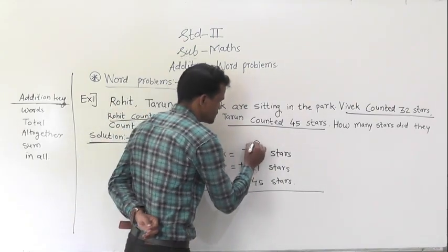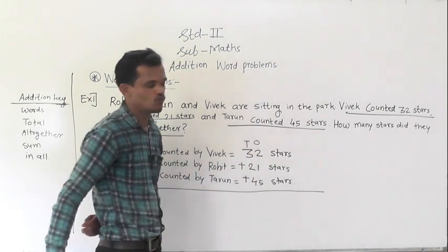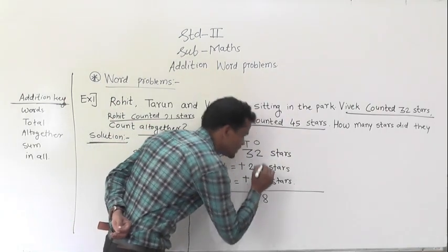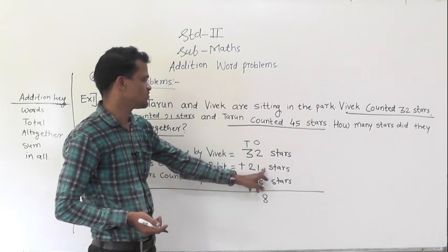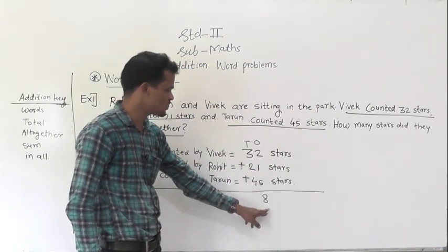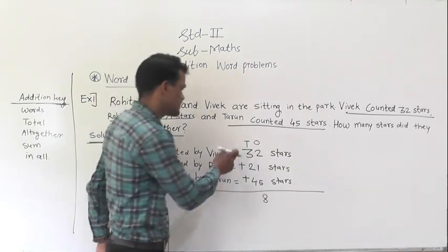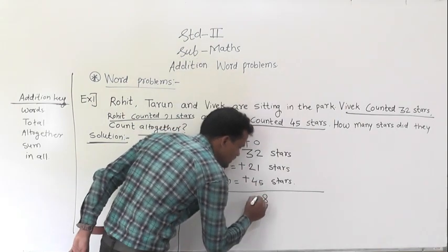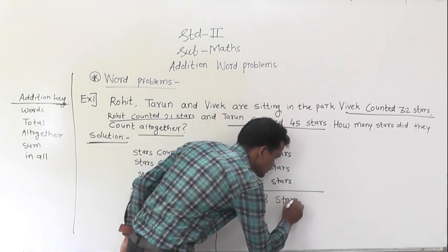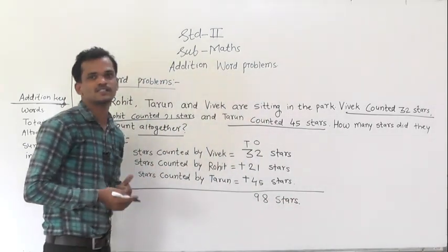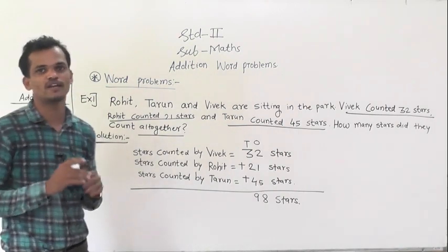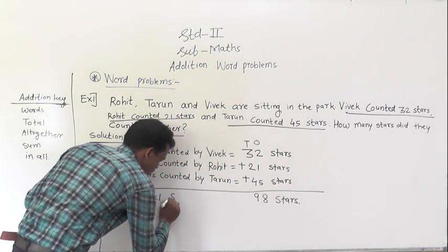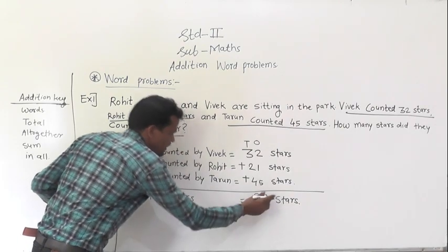Add 32 plus 21 plus 45. Start from the ones place: 2 plus 1 is 3, and 3 plus 5 is 8. Use your fingers to count forward if needed. Write 8 at the ones place. Now the tens place column: 3 plus 2 is 5, and 5 plus 4 is 9. So the answer is 98 stars — they counted 98 stars in all.